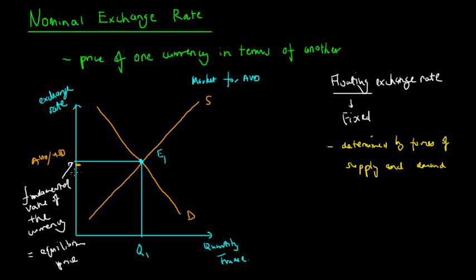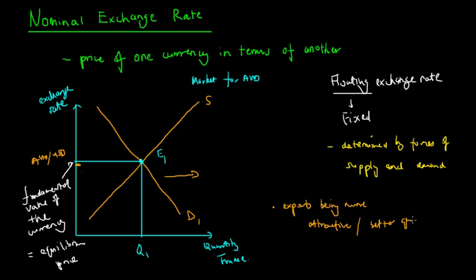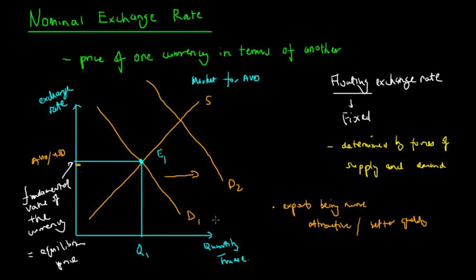Let's look at what happens if the demand curve shifts to the right. This could occur if exports become more attractive or of better quality. For example, say something magical happened to the Great Barrier Reef and people wanted to go there and experience it. The demand for tourism in the economy would increase, and to become a tourist people would have to buy Australian dollars, so the demand for AUD would shift to the right from D1 to D2.